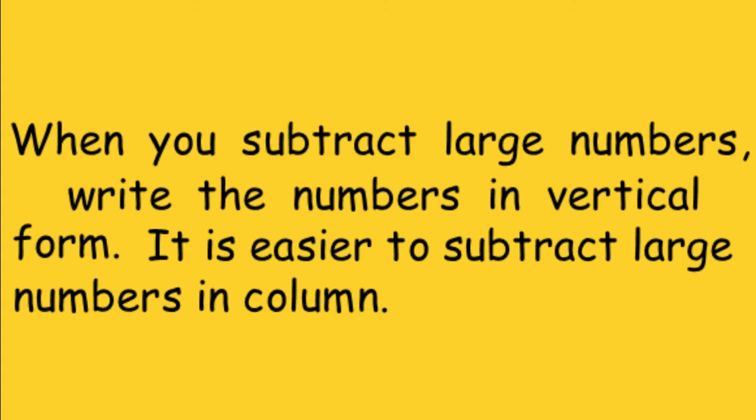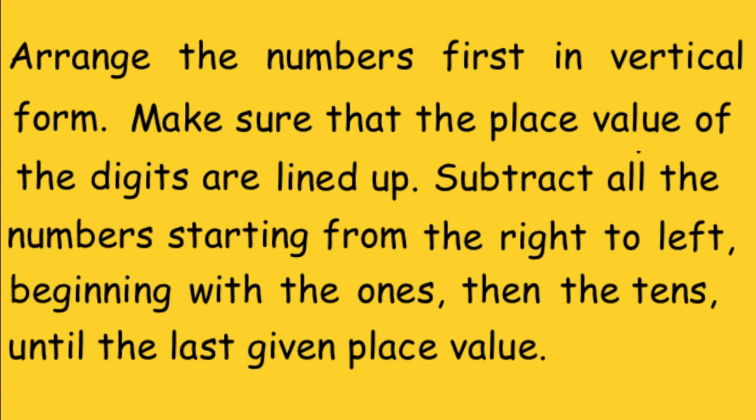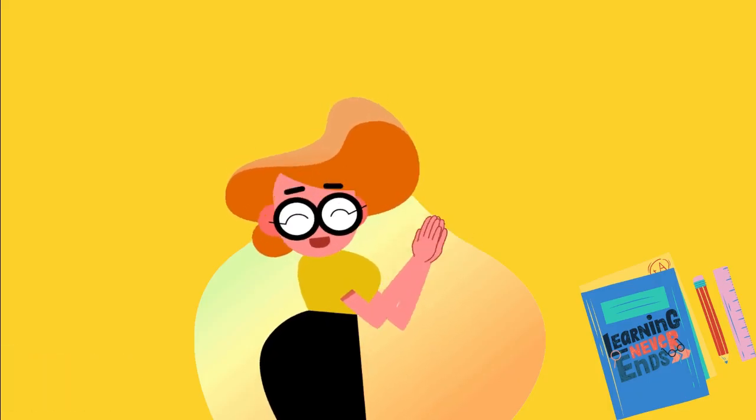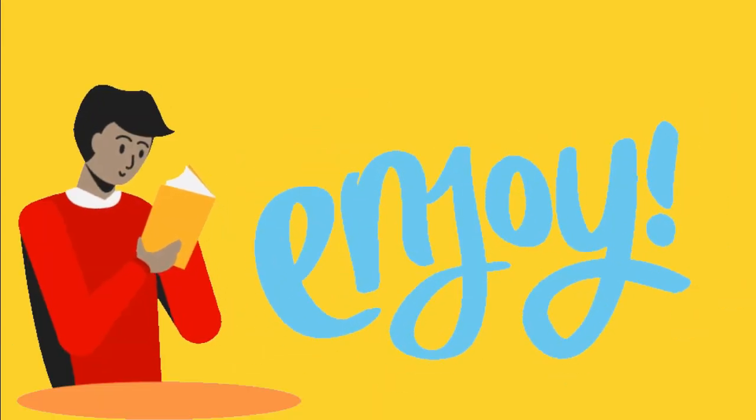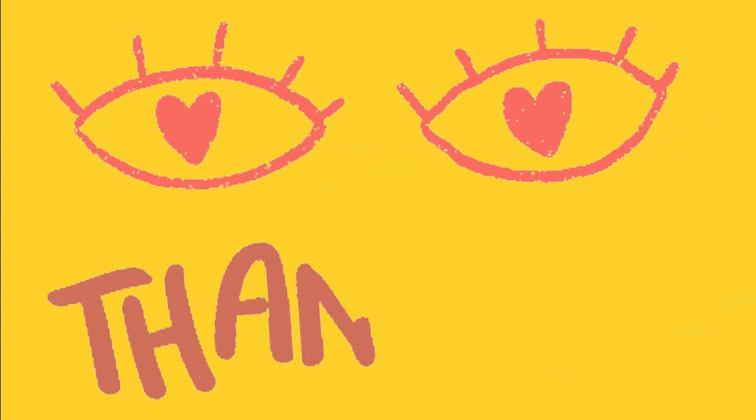Always remember: when you subtract large numbers, write the numbers in vertical form. It is easier to subtract large numbers in columns. Arrange the numbers first in vertical form, making sure that the place value of the digits are lined up. Subtract all the numbers starting from the right to left, beginning with the ones, then the tens, until the last given place value. That's all, kids — I hope you enjoy learning. See you next time, bye!